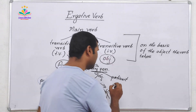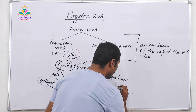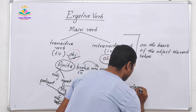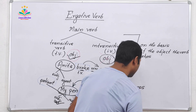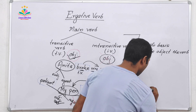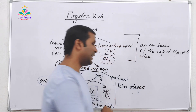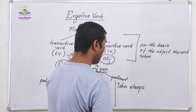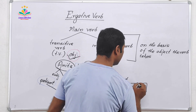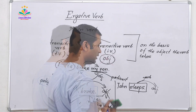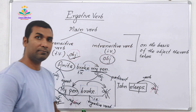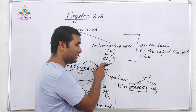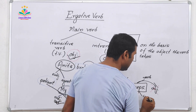Next example: 'John slips.' The verb here is 'slips.' This verb doesn't have its object. So again, intransitive verb never takes any object — so this is an intransitive verb.